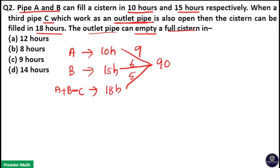That means here full cistern capacity is 90 liters. A's efficiency is 9, B's efficiency is 6, and A, B, and C's combined efficiency is 5. That means A plus B minus C's efficiency is 5. We already know A's efficiency is 9 and B's efficiency is 6. So 9 plus 6 is 15, 15 minus 5 is C. So C's efficiency is 10.